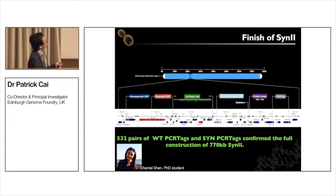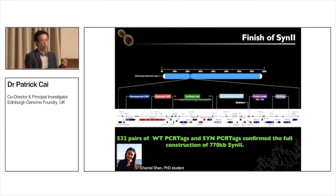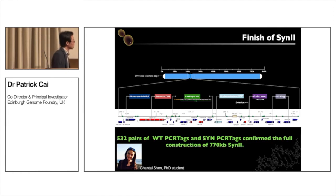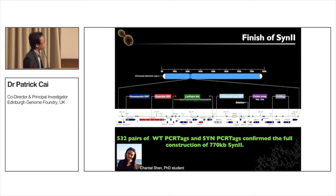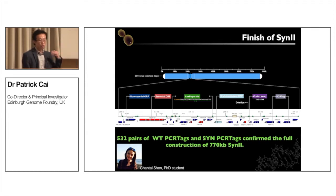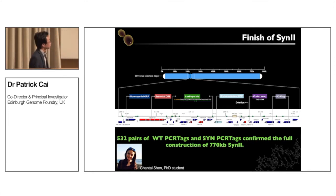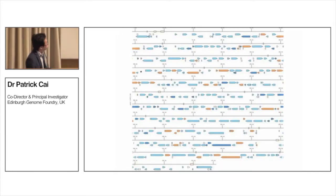Now I'm going to switch gears to tell you the story we just finished. We just finished chromosome 2 — 770 kb — the world's largest synthetic chromosome to date. This was spearheaded by my PhD student Shantao Shen, who unfortunately cannot be here today. It has 500 pairs of loxP sites and PCR tags, meaning we need to run 1,000 PCR reactions to verify we have 100% synthetic DNA and zero percent wild-type DNA.